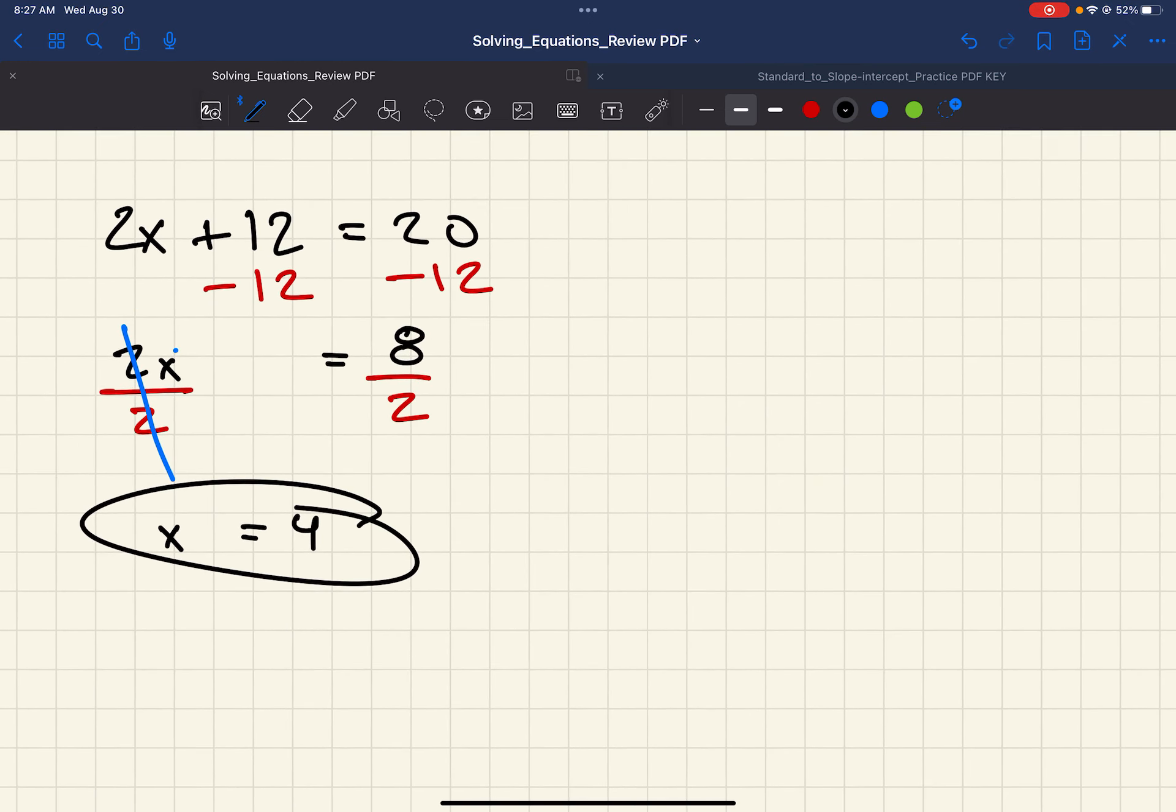But there's another way we could do this. On our first way, we subtract it, then we divide it. What if we do it the other way around? What if we divide first? So, let's divide everything by 2. So, 2x divided by 2 is 1x, or just x. 12 becomes 6. And 20 becomes 10. So, now we can subtract 6 to get rid of the plus 6. We also get x equals 4.